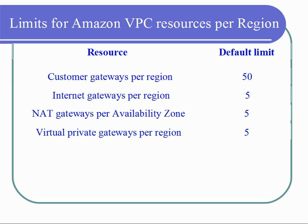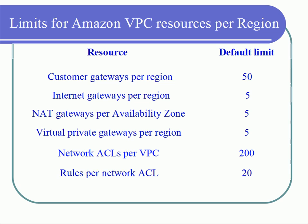Virtual private gateways per region: you can create only up to 5. Network ACLs per VPC: you can create up to 200. For each network ACL, you can add up to 20 ACL rules.